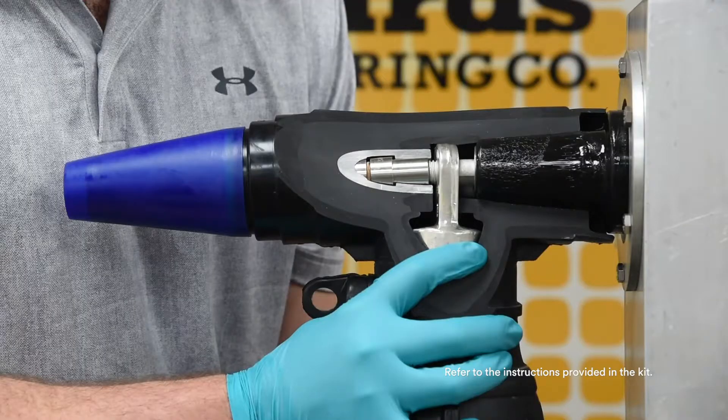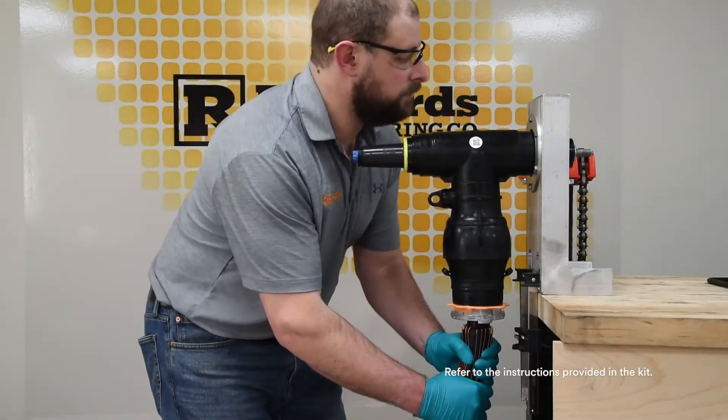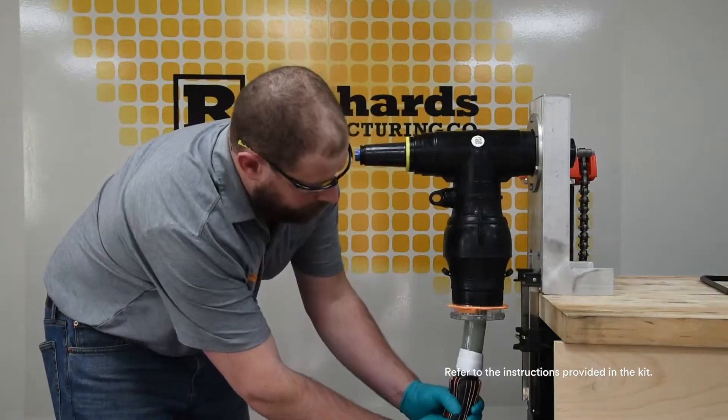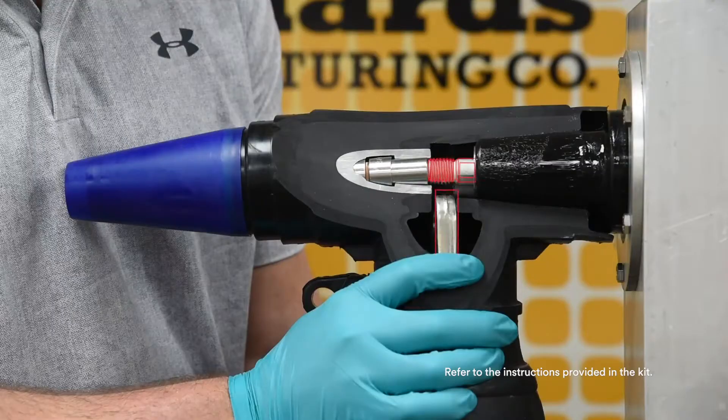As an additional check that the stud is through the hole in the lug, tug on the power cable. Only a small amount of movement should be possible. Any significant movement of the cable indicates the assembly is misaligned and the seating step should be repeated.